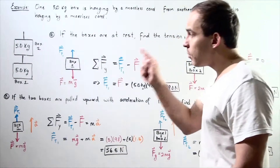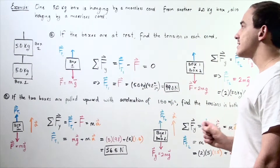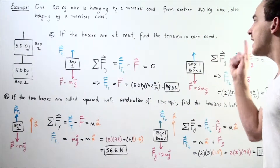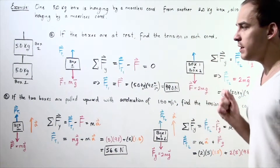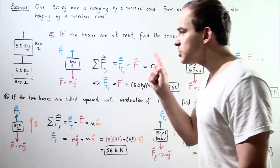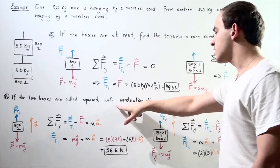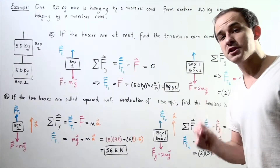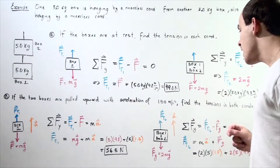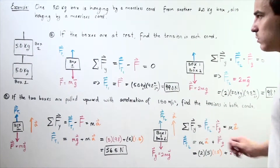In part A, if the boxes are at rest, find the tension in each cord. In part B, if the two boxes are pulled upward with an acceleration of 1.5 meters per second squared, find the tensions in both of the cords.